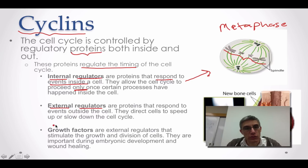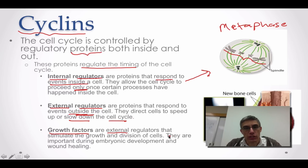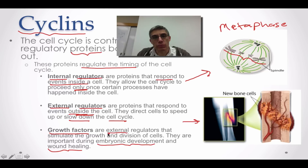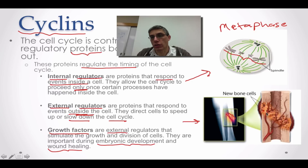External regulators are proteins that respond to events outside of the cell and direct cells to either speed up or slow down the cell cycle. Growth factors are an example of an external regulator. They are very important for embryonic development and also for wound healing. For example, if a bone fracture occurs, special proteins called regulators encourage the cells along the fracture point to divide rapidly so that the broken bone heals as quickly as possible.